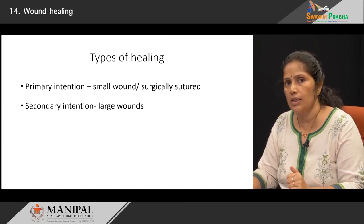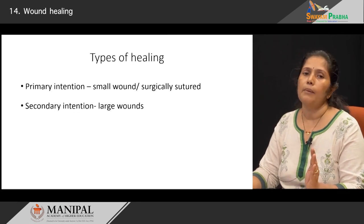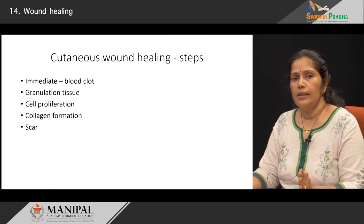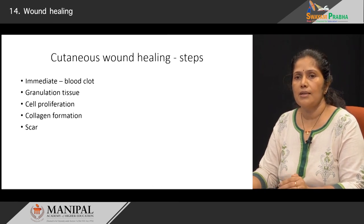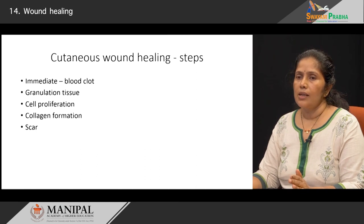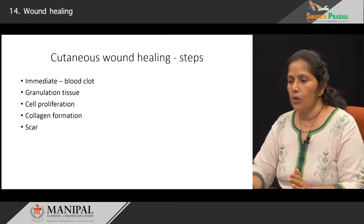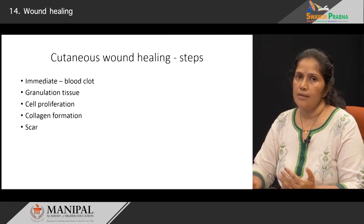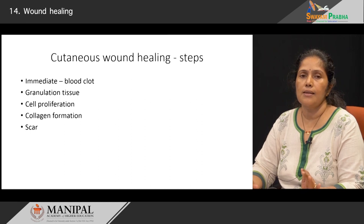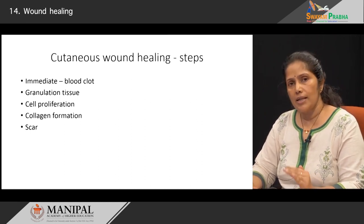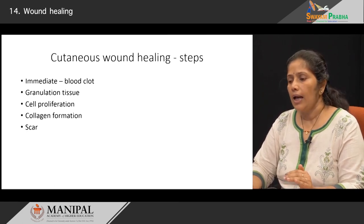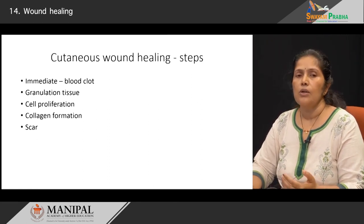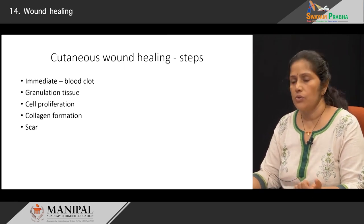Please remember there are two ways in which tissues heal: either by primary intention when there is a small wound, and by secondary intention when there is a larger wound. Whatever the type of healing, the basic steps include: first, a blood clot forms; as the days pass, granulation tissue forms; cells start to proliferate; these cells lay down the extracellular matrix; collagen formation occurs; and this leads to scar formation.